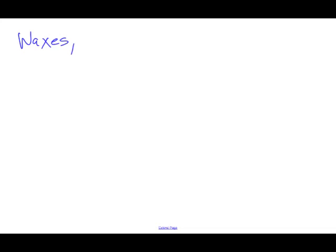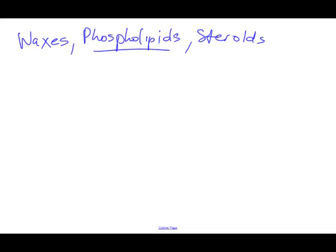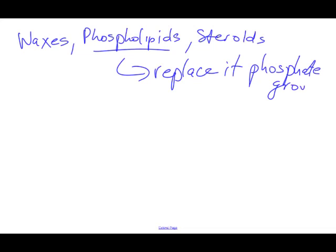Let's look at some other lipids — waxes, phospholipids, and steroids. In terms of phospholipids, these are lipid molecules very similar to triglycerides; however, we lose one of the fatty acids and replace it with what we call a phosphate group.